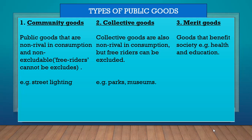There are three types of public goods: community goods and collective goods. Community goods and collective goods are similar in that they are non-rival in consumption. What this means is that more than one person can use these goods at the same time — more than one person can use the same public good at the same time.